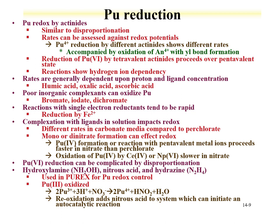The oxidation state of plutonium is very important to control and understand. Plutonium can undergo redox by actinides, similar to disproportionation, and these rates have been assessed. For instance, reduction of plutonium-6 by tetravalent actinides proceeds over pentavalent states, going from the 6 to the 5 to the 4. These reactions tend to show a hydrogen dependency — meaning acid — so keeping plutonium in an acidic environment can limit changes in redox.